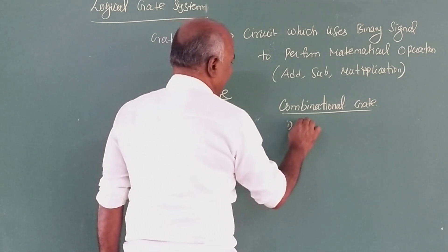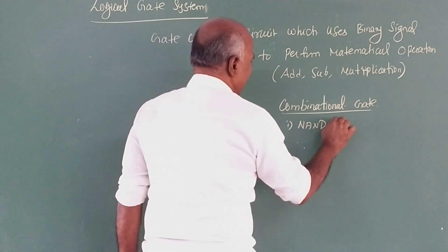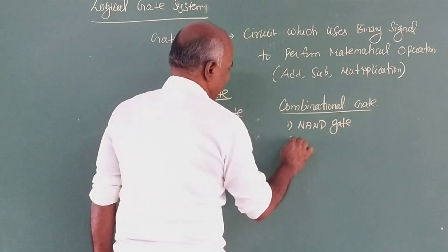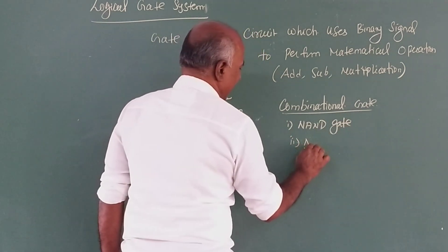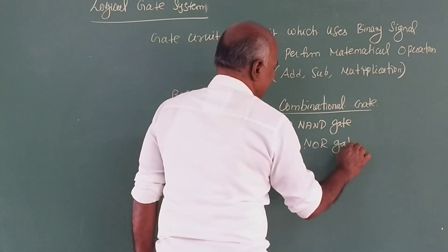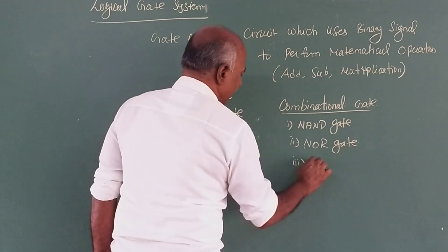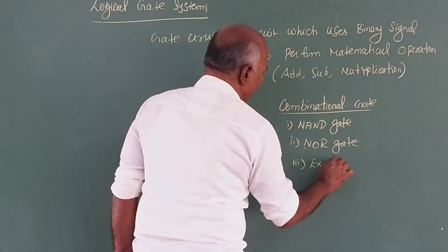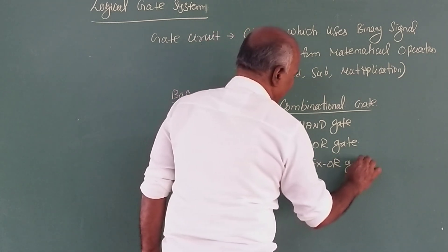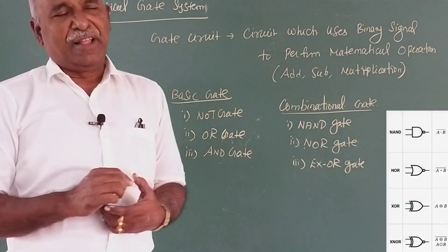From the basic gates, there are also combinational gates. These include the NAND gate, the XOR gate, and the bubbled OR gate, among many other gates. These are the main combinational gates.